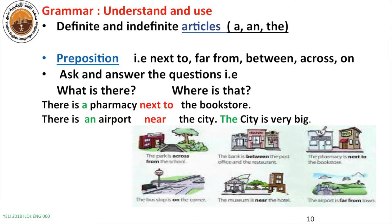THE is used for something very specific or something which has already been mentioned. For example: there is an airport near the city — and the city is very big. I have already mentioned the city, so when I mention it again, I say the city. For example: there are many students in my class. The student sitting on the right side is a very good student. There are many chairs in my class. The chair on the right side is mine.